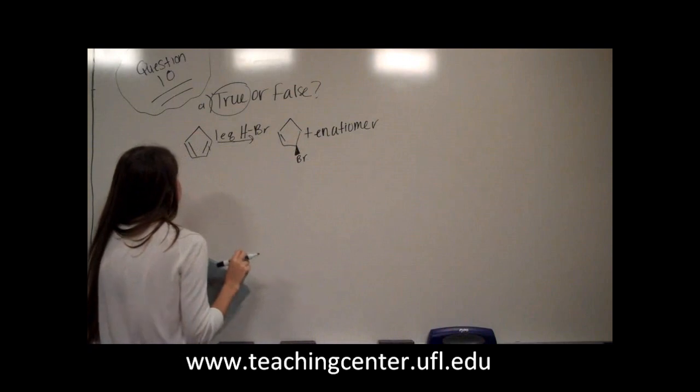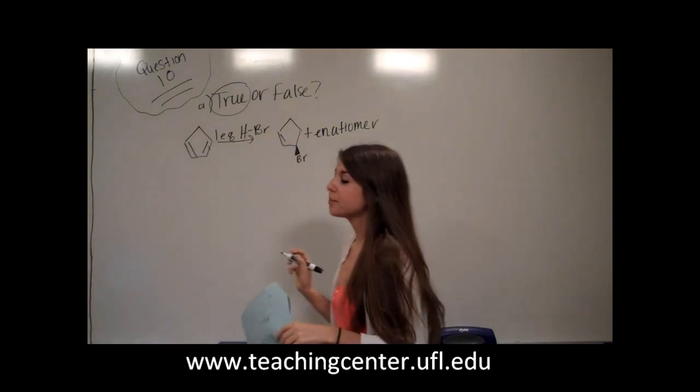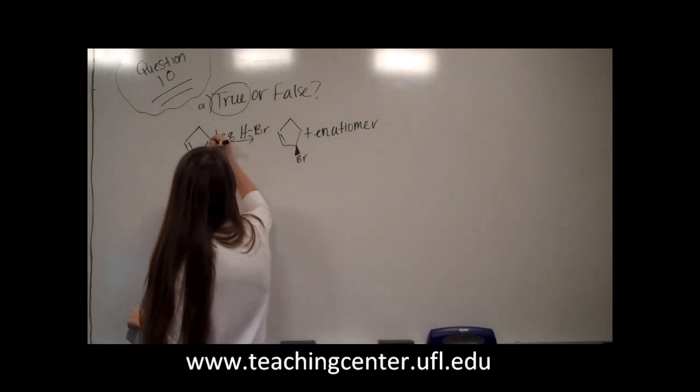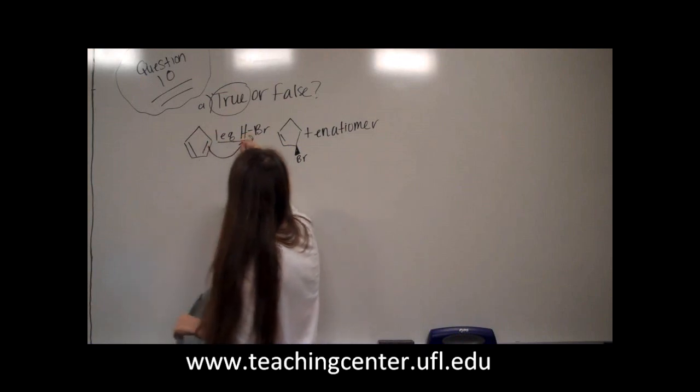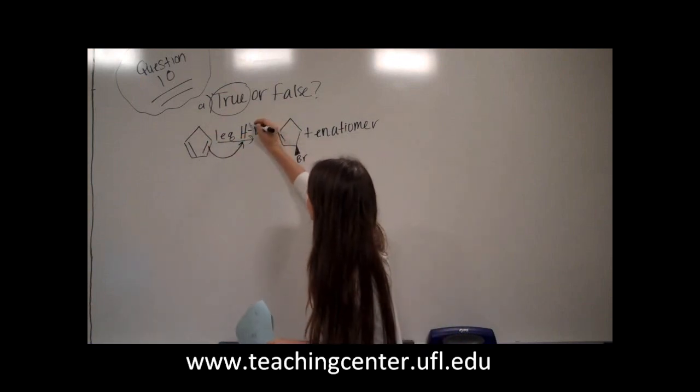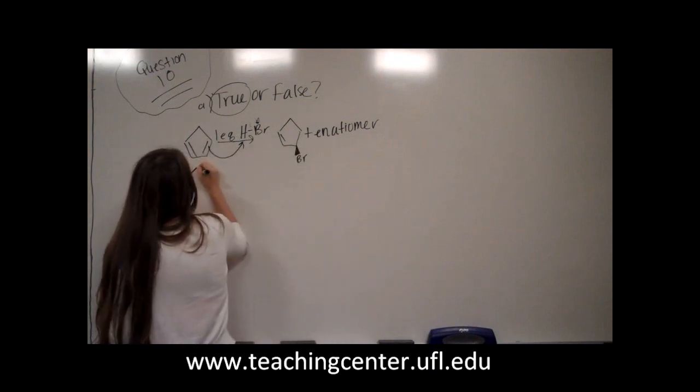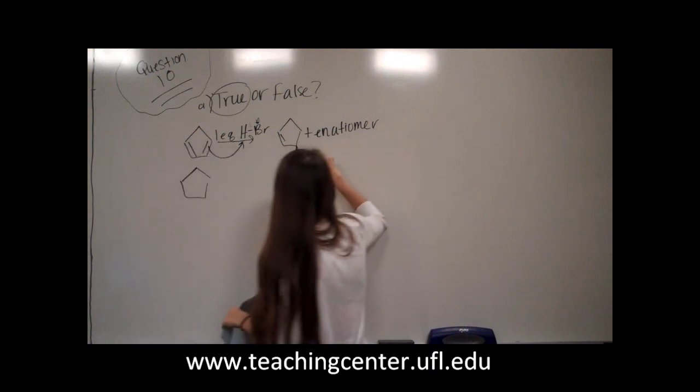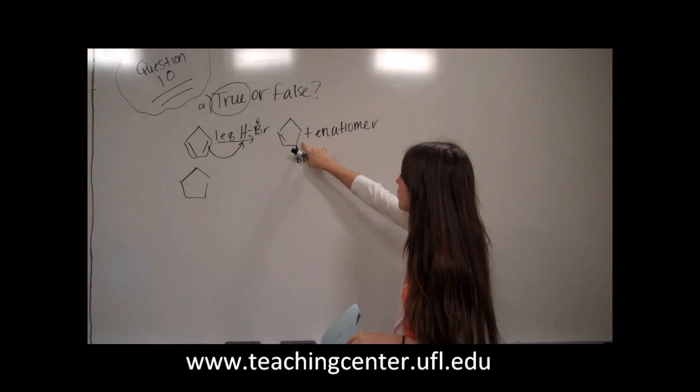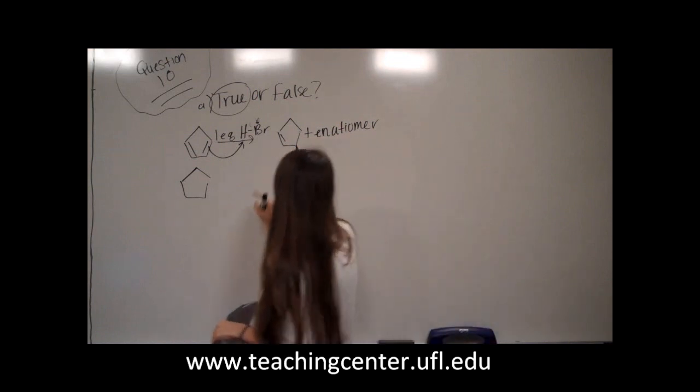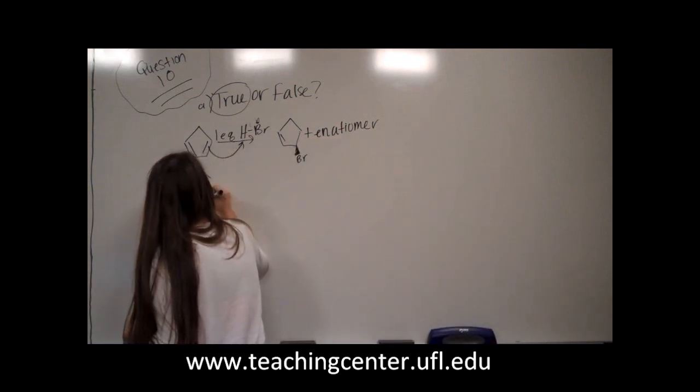So the best way to figure this out is by actually doing the mechanism. So first things first, your double bond grabs onto the H, displaces bromine. And so this product would mean that our carbocation would be in this spot right here. So we would have our carbocation right here.